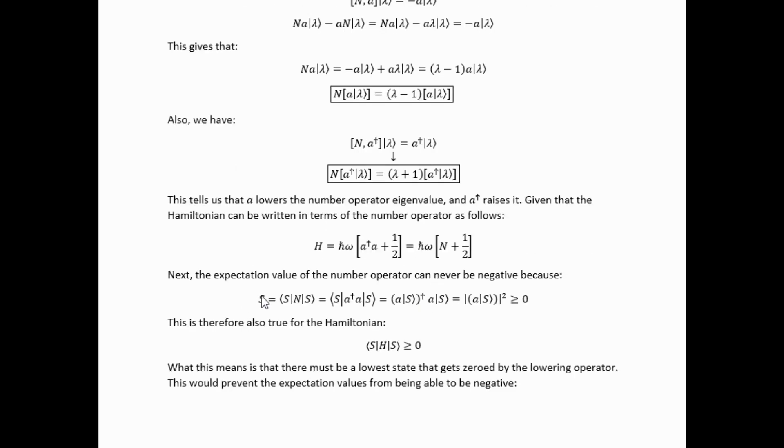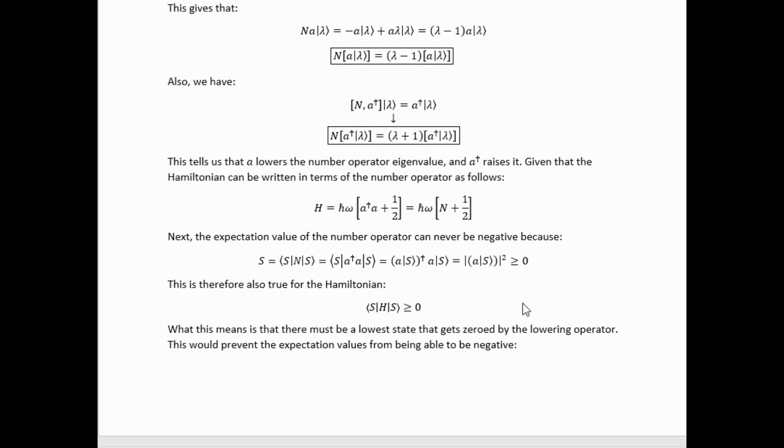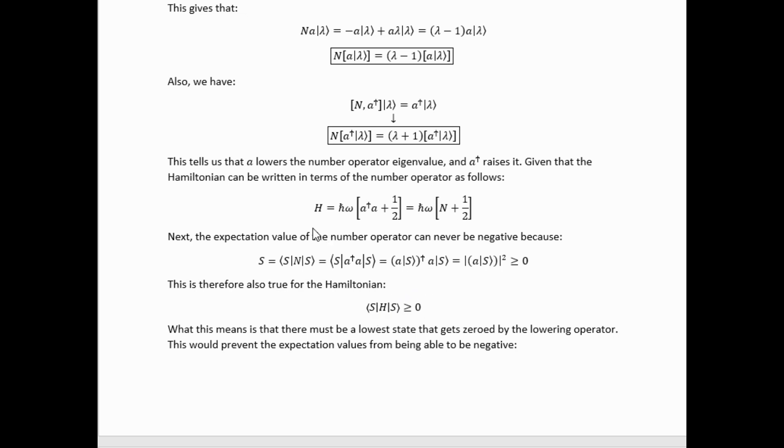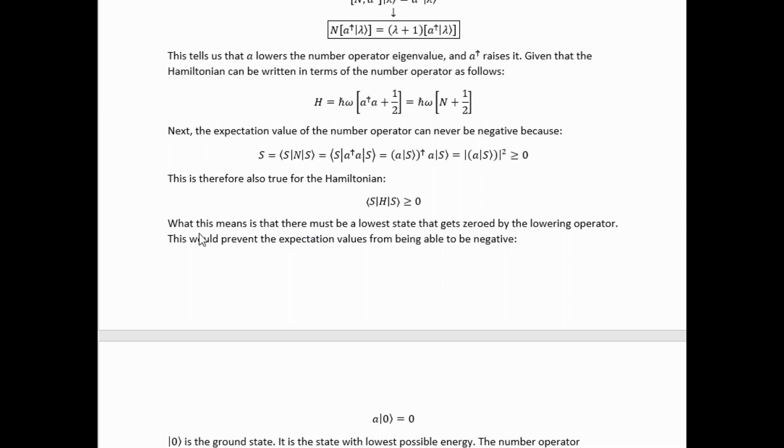If we next consider that the expectation value of the number operator must be non-negative, you can see that from here, and that implies the same result for the Hamiltonian given the relationship between the number operator and the Hamiltonian, we then see that this must mean that there's a lower state that gets zeroed by the lowering operator.